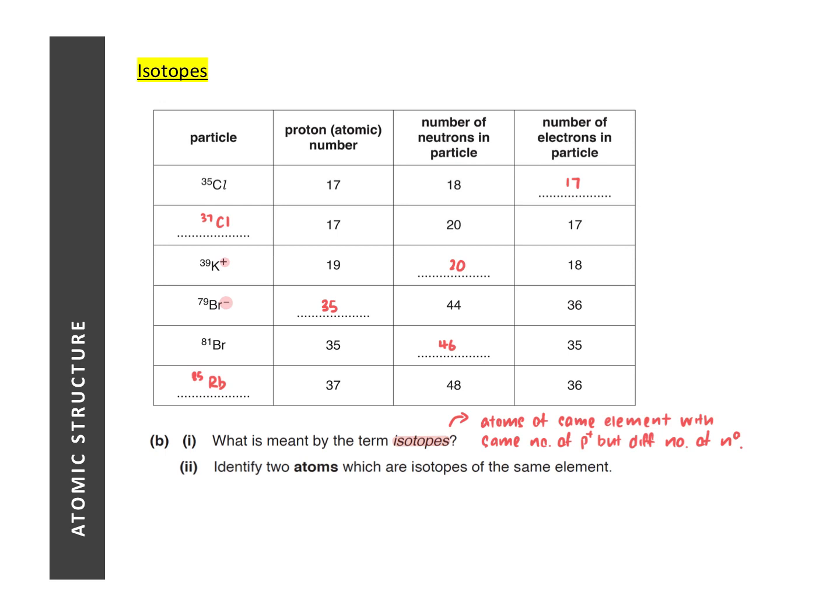For the nuclear number of rubidium, please do not simply look at the periodic table. Because whatever number that's given in the periodic table is not the nuclear number, but the relative atomic mass. How do we get the nuclear number? Just add number of protons plus the number of neutrons.